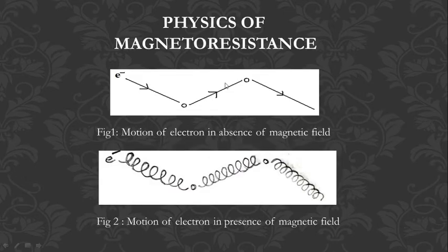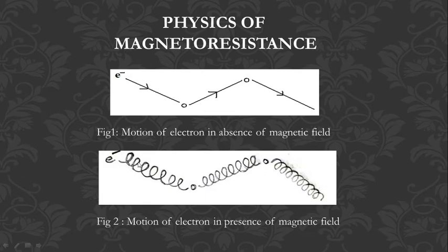In the absence of a magnetic field, electrons move in a straight-line zigzag fashion. In the presence of a magnetic field, the electron will feel a force and move in a spiral path, causing the path length to increase. As a result, it will suffer more scattering, and the magnetoresistance also increases.